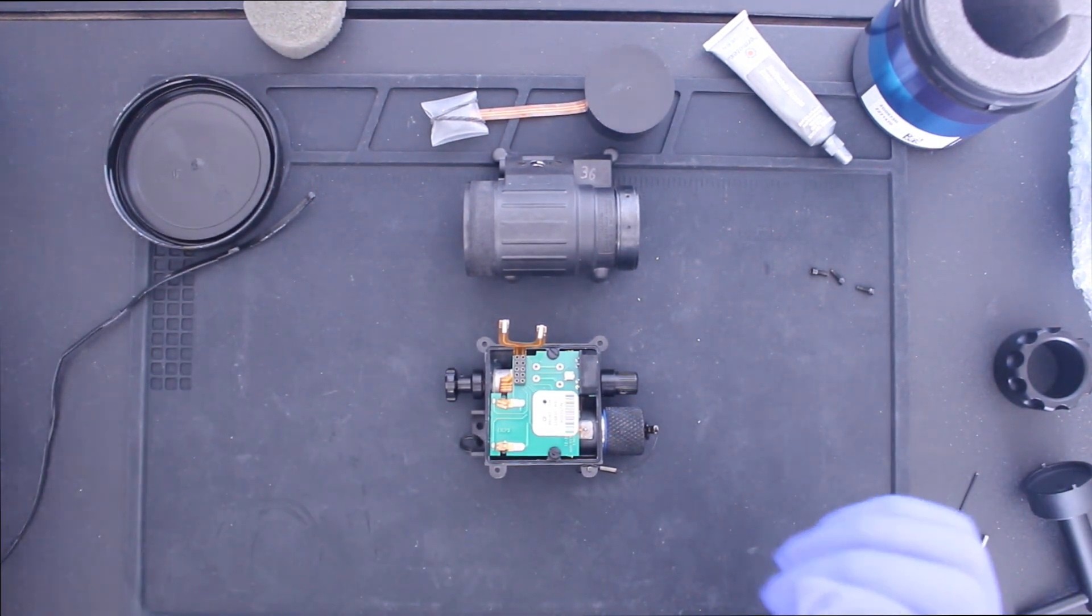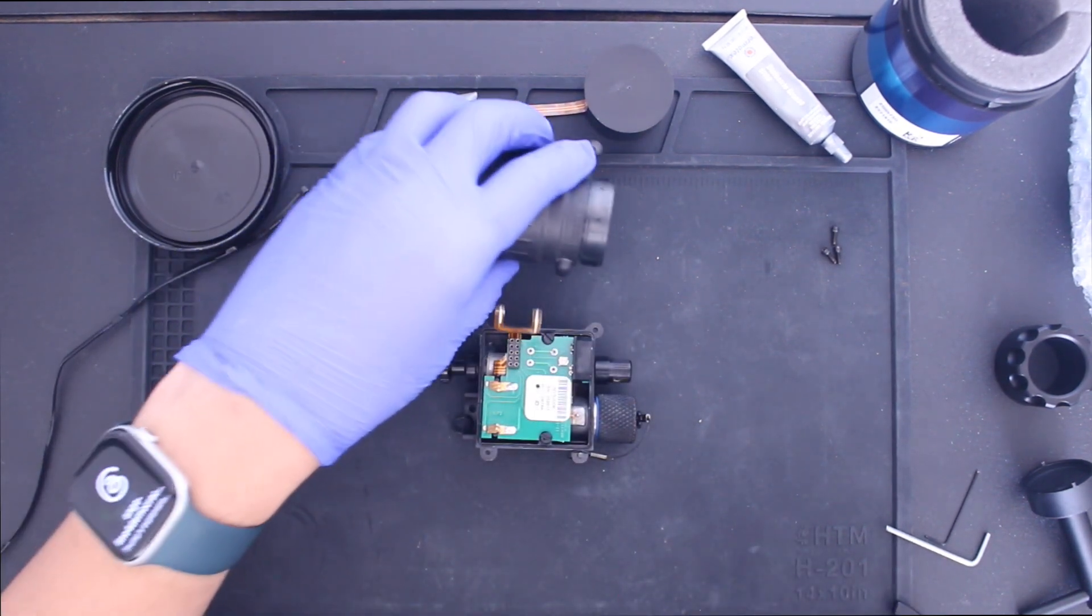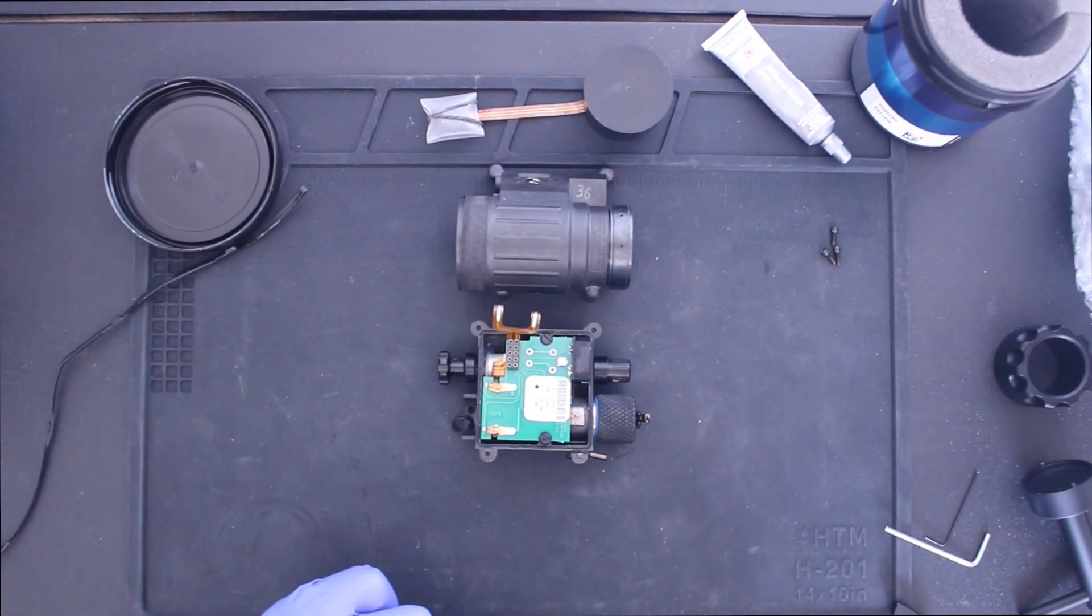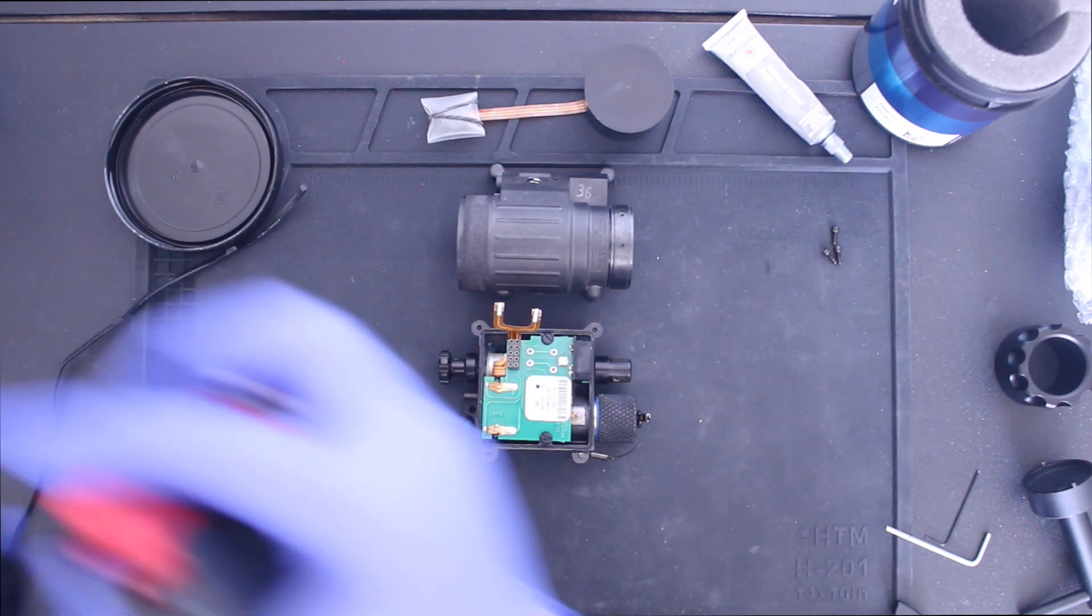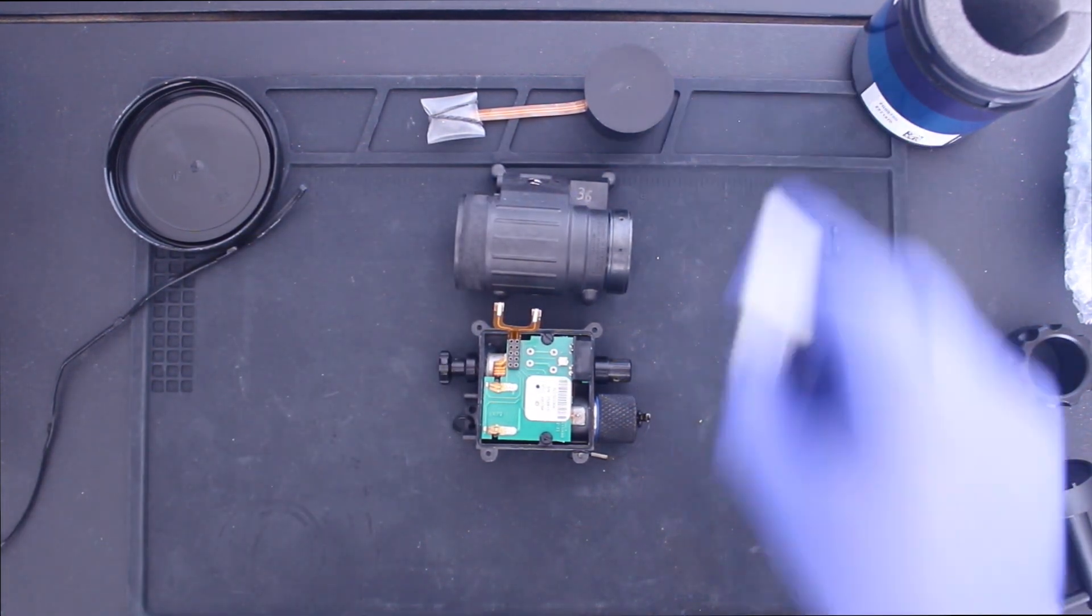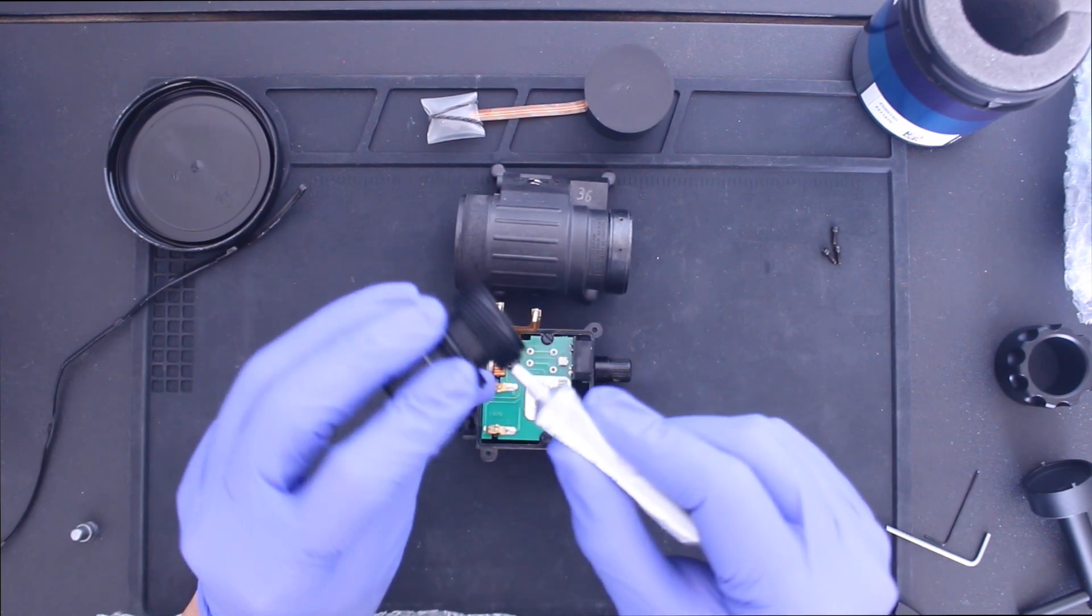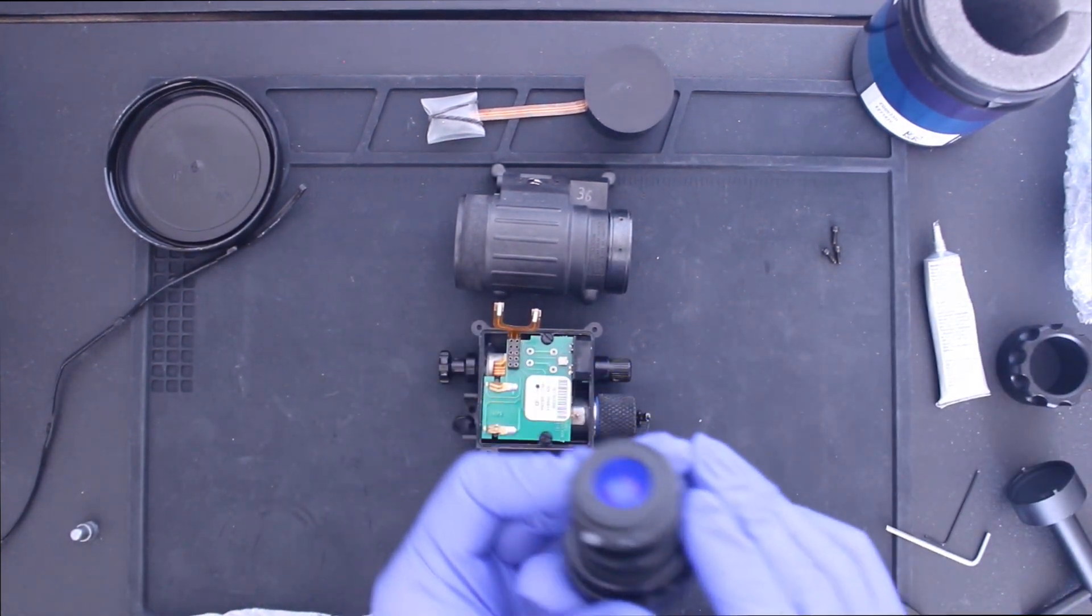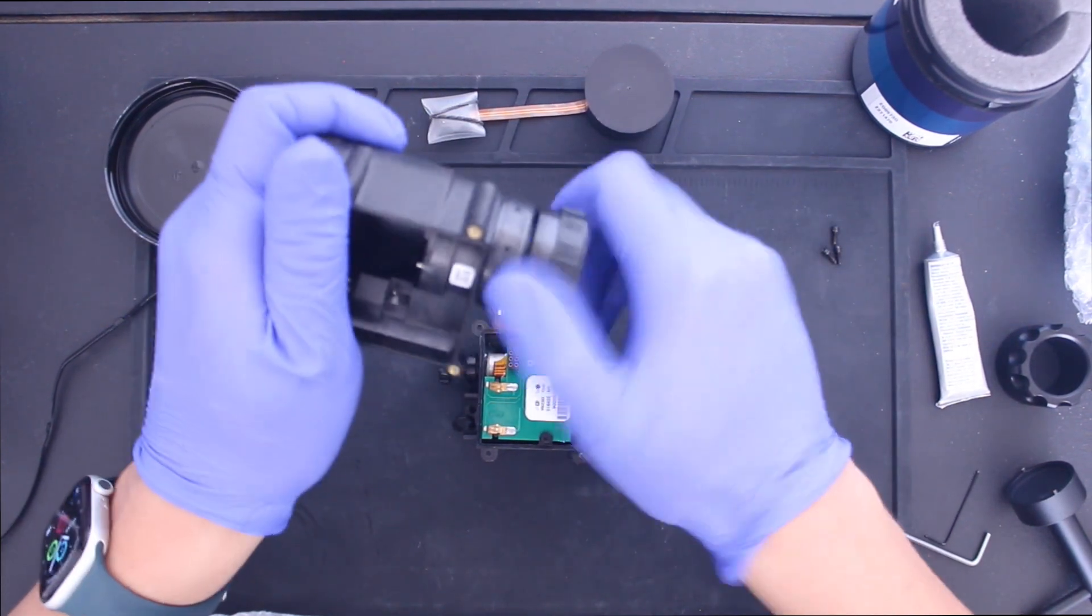Set that aside for now. The first thing you want to do is give it a good dusting. So let's dust the housing and everything. Dust is always going to be an enemy when you assemble your night vision. The first thing I'm going to do is install my lens, my objective lens into the front of the housing. So what I like to do is apply some dielectric grease to the threads of the objective lens. Just help it. You don't need a lot, you just need a little bit. Screw it in.